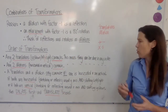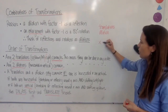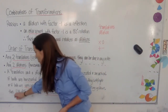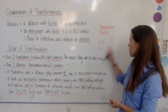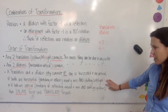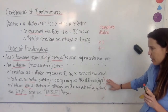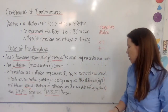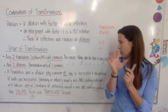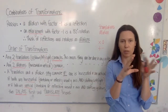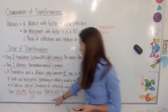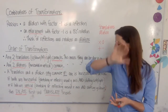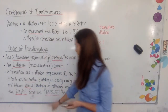Thinking in terms of order of operations: multiplication and division are generally done before addition and subtraction. Similarly here, when you have one of each in the same direction, dilate first, then translate second. For example, if both are horizontal — meaning a horizontal stretch, compression, or reflection around the y-axis — and you also want to shift horizontally, do the dilation first. Likewise, if you're stretching vertically or reflecting around the x-axis and you want to shift up or down, perform the dilation first and the translation second.